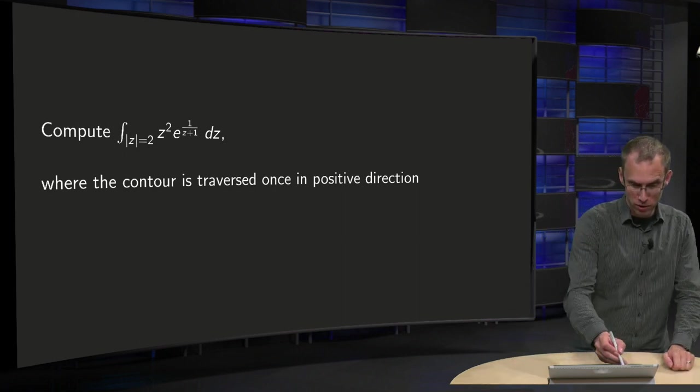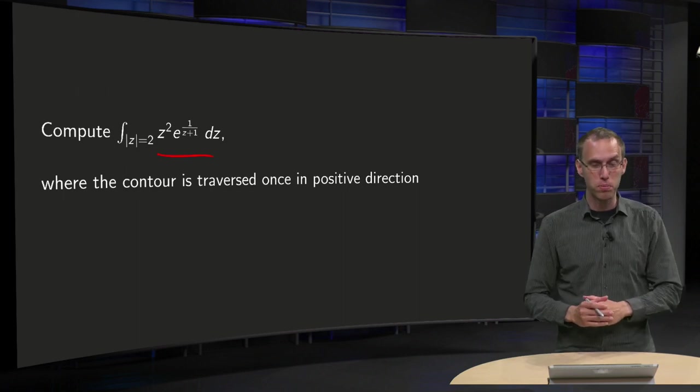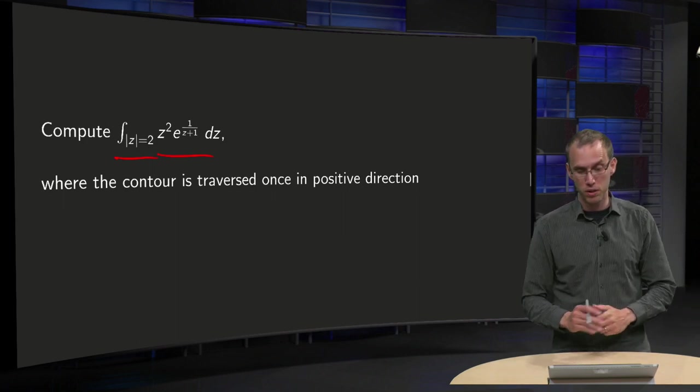So we have the following function, z squared times e to the power 1 over z plus 1, with the following contour which is traversed once in a positive direction.